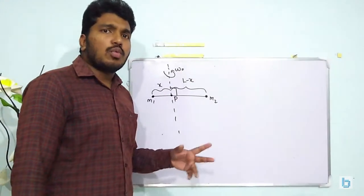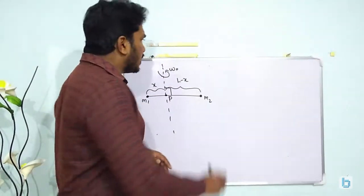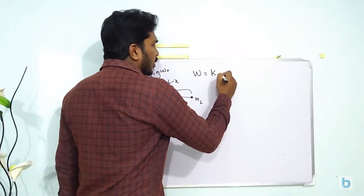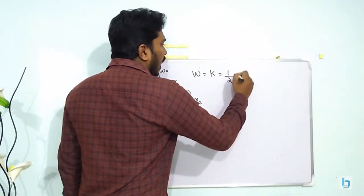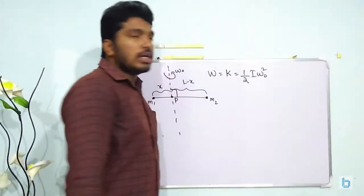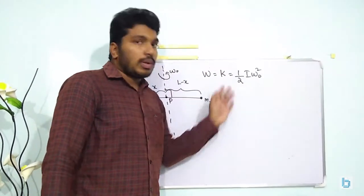So we know that based on work-energy theorem that work done is equal to kinetic energy, which is ½Iω². Here the angular velocity is ω₀, so ½Iω₀².